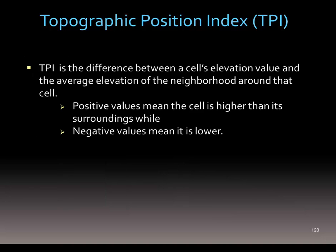The TPI is the difference between a cell's elevation value and the average elevation of the neighborhood around that cell. Positive values mean that cell is sticking out — it's higher. Negative means it's lower.